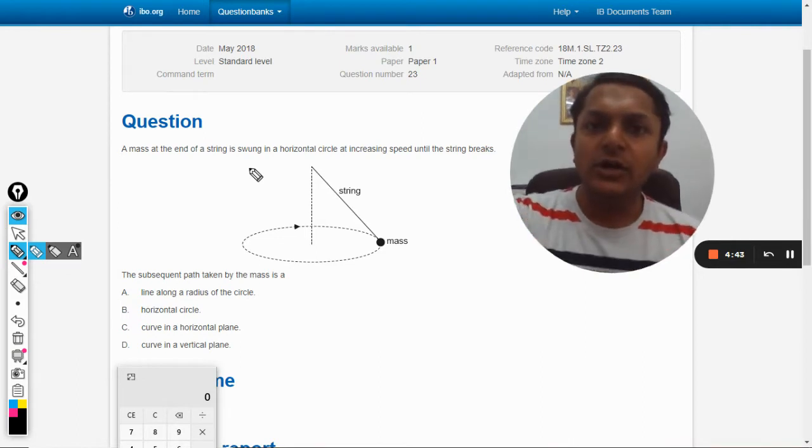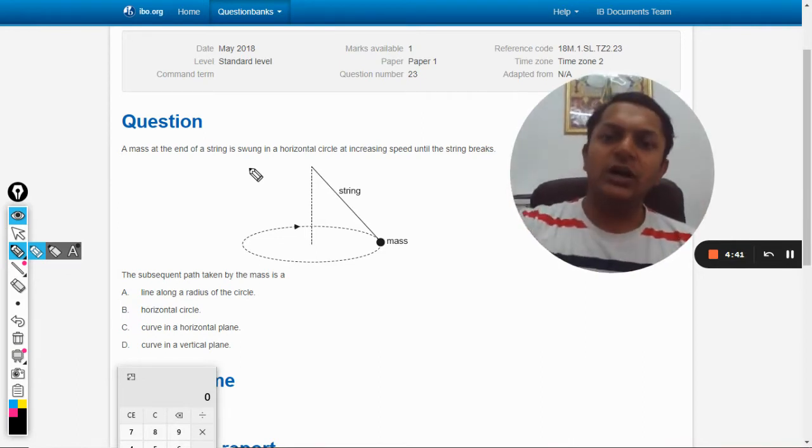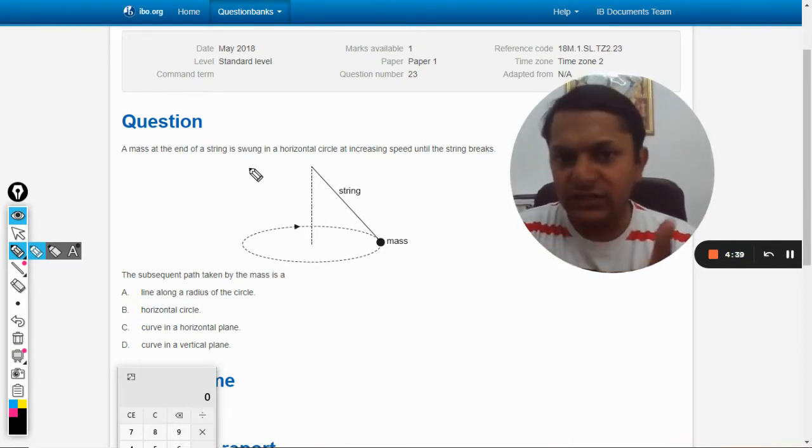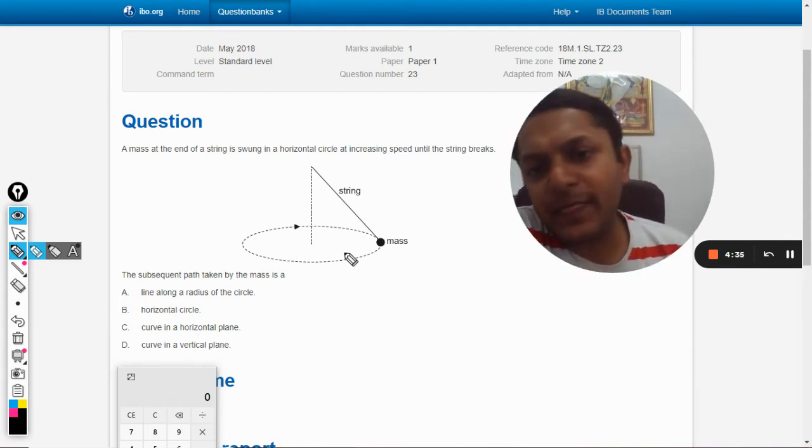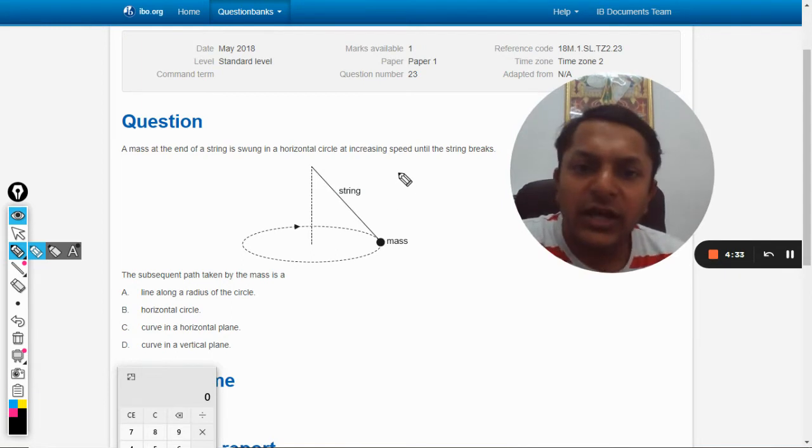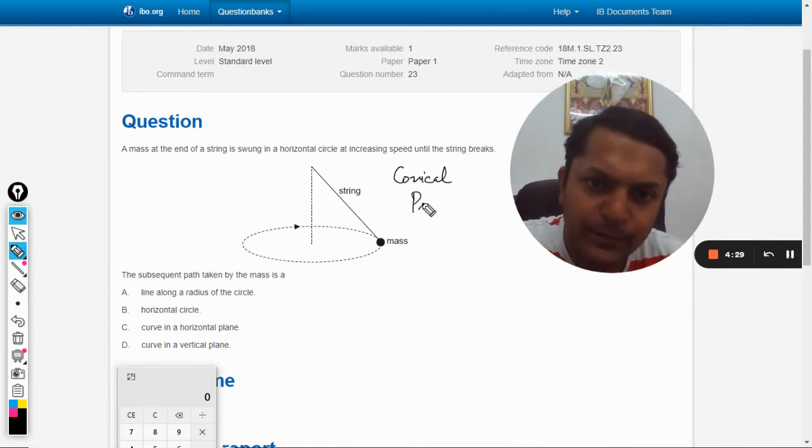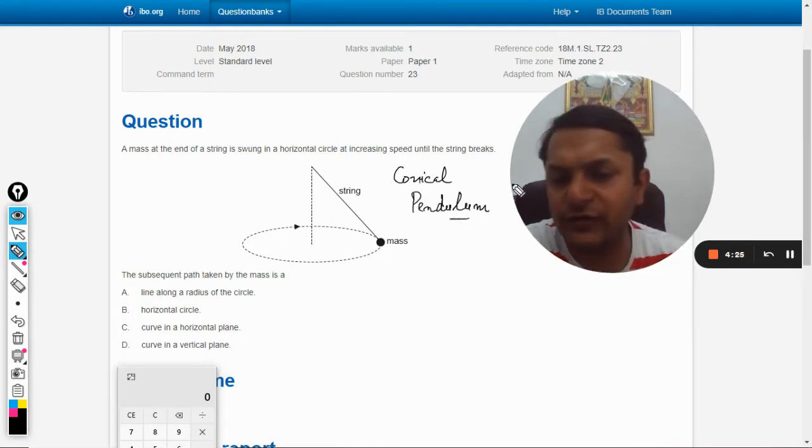The path will be followed by the bob or the stone which is being swung in the way that is shown in the diagram. This kind of motion is known as a conical pendulum.